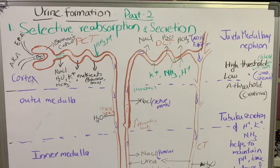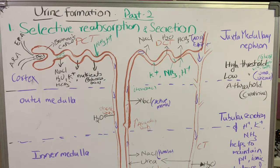Today we learn about selective reabsorption and renal secretion — the second part of urine formation. In the previous section we learned about glomerular filtration. Our two kidneys together produce 125 ml of urine per minute, and this is known as the glomerular filtration rate.